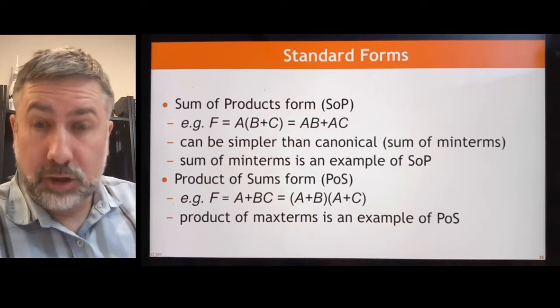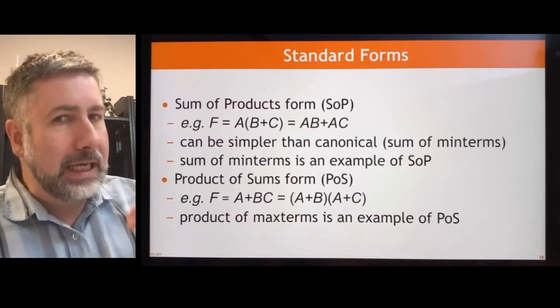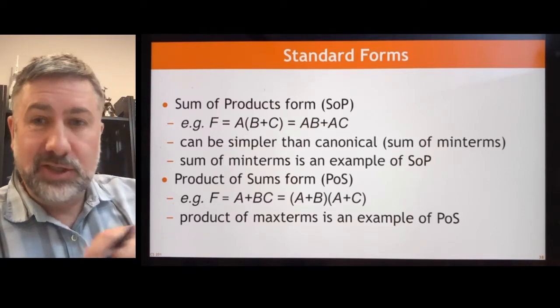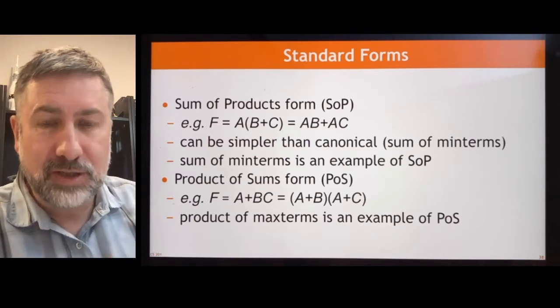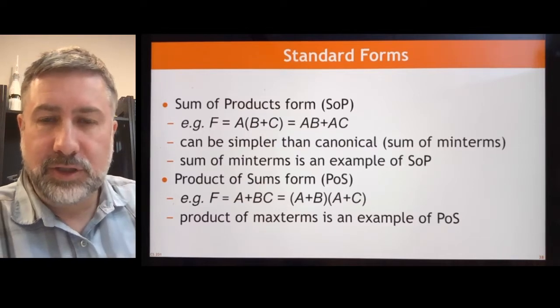In the last video we talked about canonical forms. These were forms that were kind of like a truth table built into the function itself. You could see just by which minterms are present in the function which inputs will result in a zero or a one in the function itself.